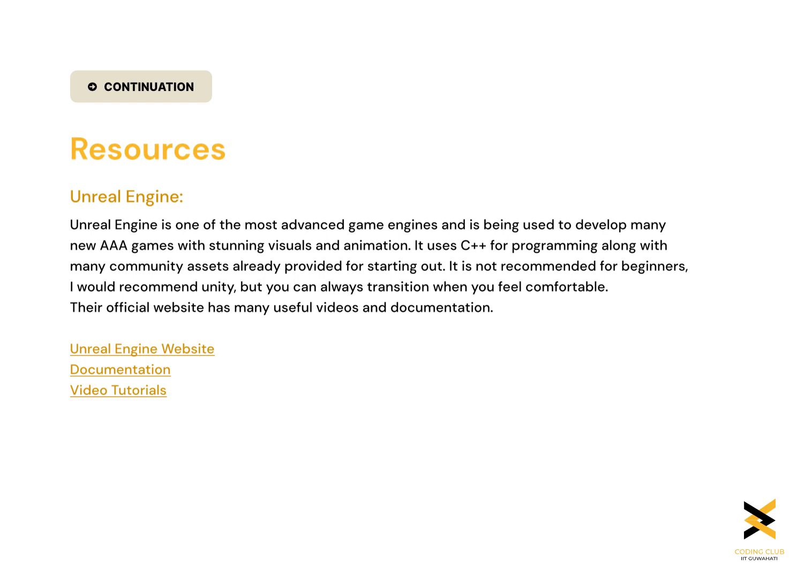Unreal Engine by Epic Games is one of the most advanced game engines out there and is being used to develop many new AAA games with stunning visuals and animation. Unreal Engine comes with a flurry of powerful tools to help users add features like ray tracing, anti-aliasing, augmented reality, and virtual reality. Ray tracing accurately calculates every light ray that bounces off objects in a scene, resulting in stunning and color-accurate landscapes. Anti-aliasing softens sharp edges and gives your game an artistic look. Unreal Engine uses C++ for programming and has many community assets already provided for starting out. I would not recommend it for beginners — I would recommend Unity — but you can always transition when you feel comfortable. Their official website has many useful videos and documentation, so be sure to check them out and the links are given below.